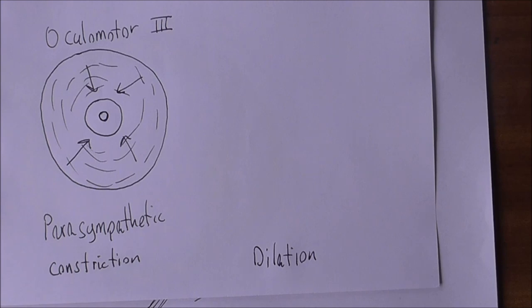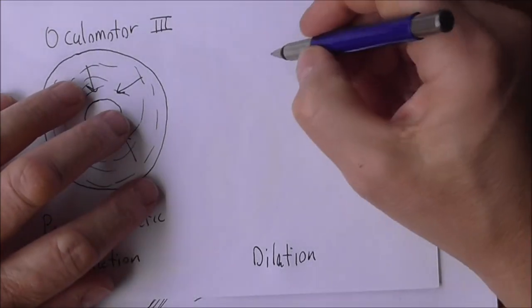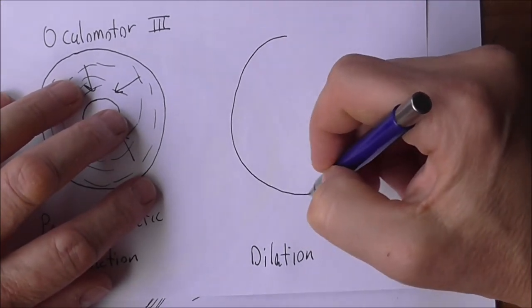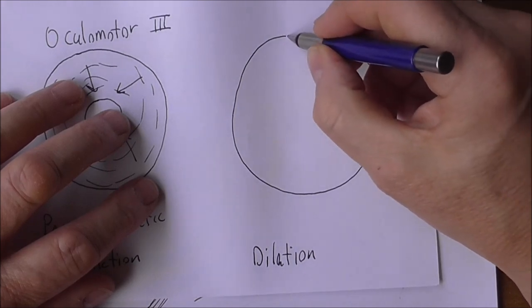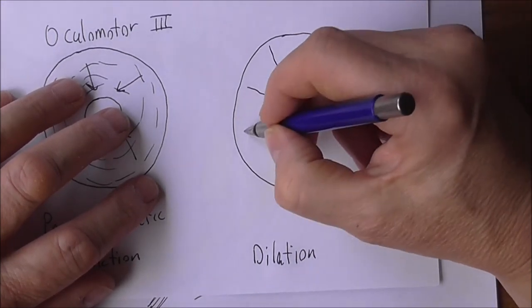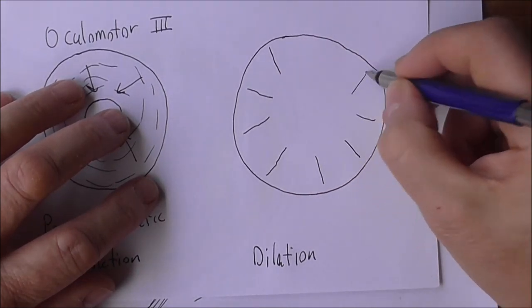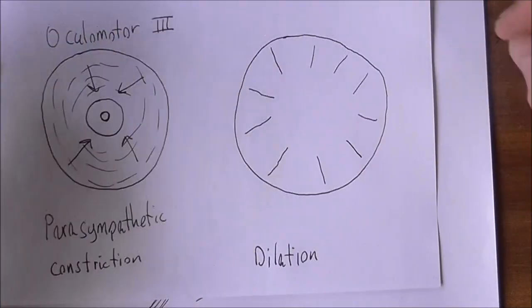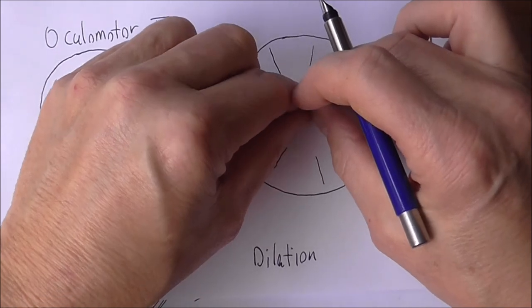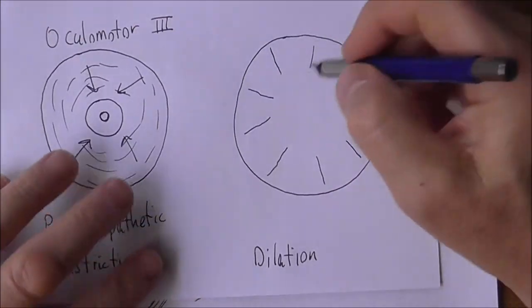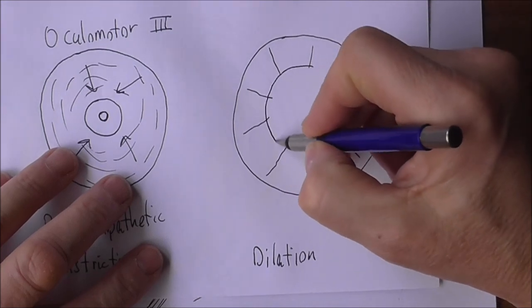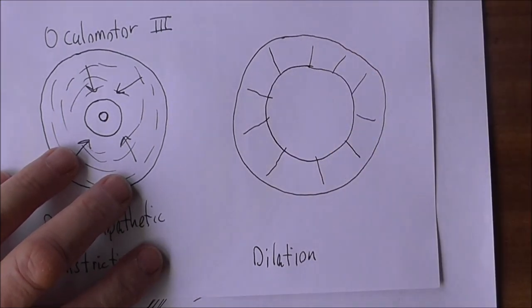Now pupil dilation is brought about by contraction of radial fibers called dilator pupilli muscles. So if we think about the outside of the iris again, there's also radial muscles in this direction, in that direction. And when these muscles contract and get shorter, that's going to pull the pupil, going to open the pupil, going to dilate the pupil. So that's contraction of the radial fibers, the dilator pupilli.